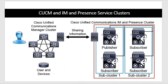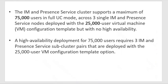CUCM and IM&P service clusters: similar to the CUCM cluster with publishers and subscribers — one node supports up to ten thousand users — IM&P also has publishers and subscribers, and can have sub-clusters within a cluster. The IM&P service cluster supports a maximum of 75,000 users in full User Connect mode across three single IM&P service nodes. With one publisher and two subscribers, it supports 75,000 users, and this is the recommended cluster type.